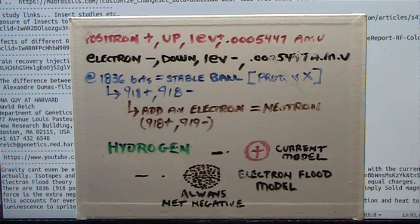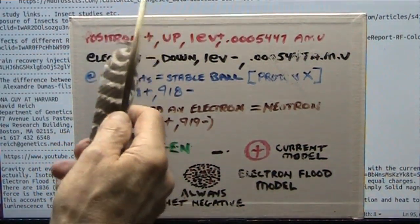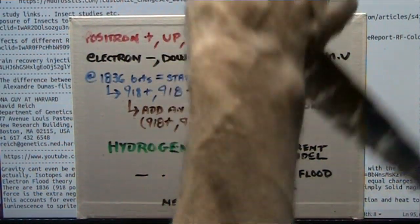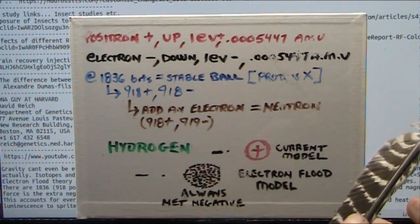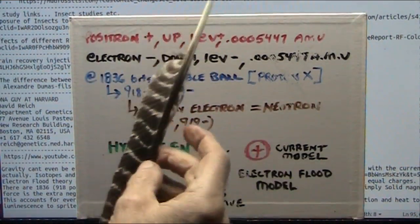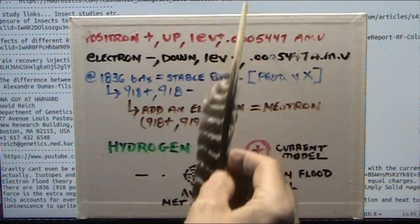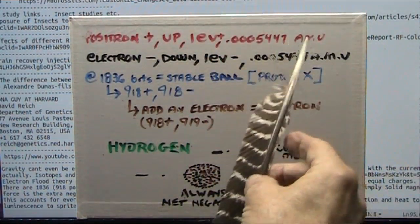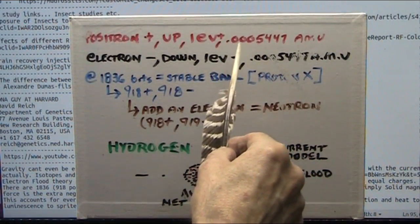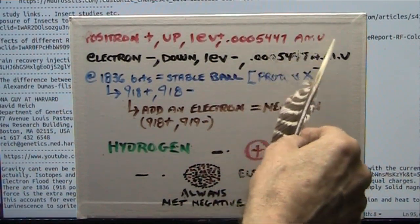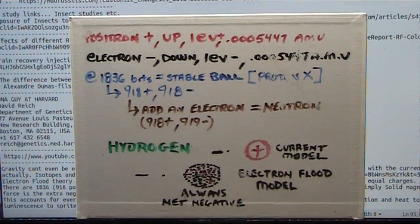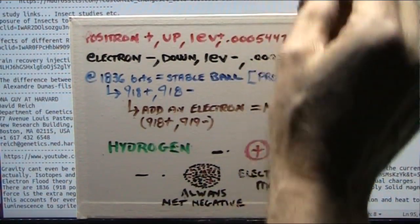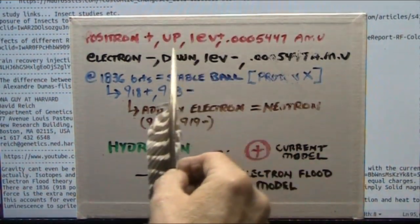A positron is an up spin and an electron is a down spin — that's the only difference whatsoever. A positron is a plus, meaning it goes up. An electron is a negative, meaning it goes down. They both weigh .0005447 atomic mass units. Identical particles: one spins away from and one spins towards the Earth.